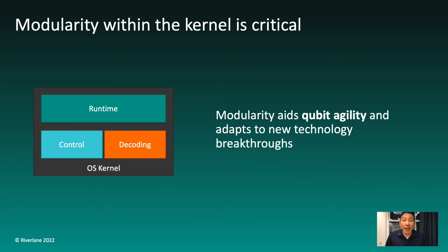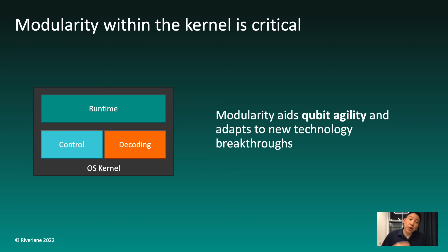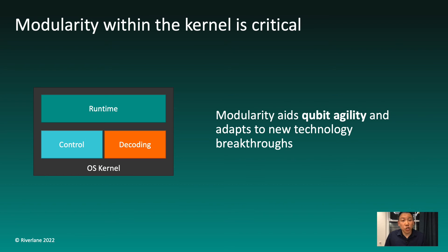In the design of the OS, we've separated out these three key components. Rather than building everything together as a single block, we have invested in defining interfaces between components to ensure they can be changed out if needed. The first reason to change things out is to take advantage of new improvements — we're constantly seeing opportunities to improve the control system, decoder, and runtime implementation, and modularity ensures each component can improve at its own pace without causing the system to suddenly break. The second reason is to support a variety of qubit types. One key learning is that the OS cannot afford to be qubit agnostic — a one-size-fits-all approach sacrifices far too much performance. Instead, we need to be qubit agile, and modularity makes inserting these custom parts as quick and painless as possible.